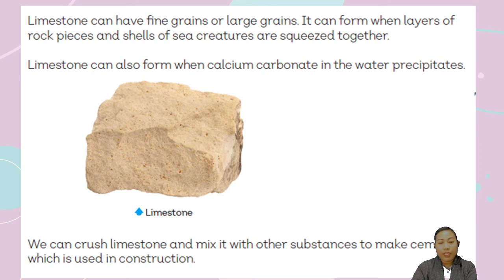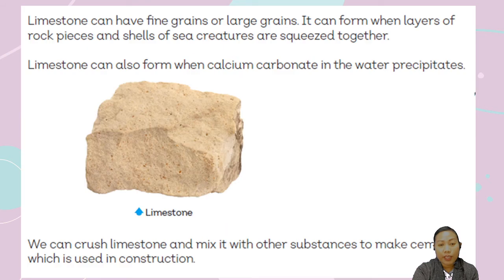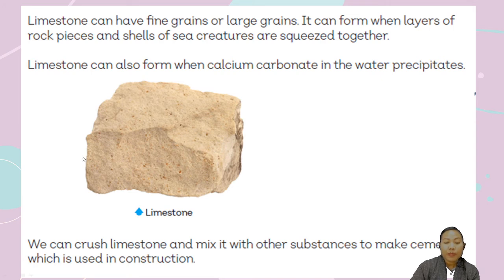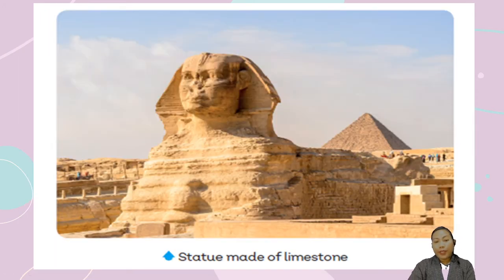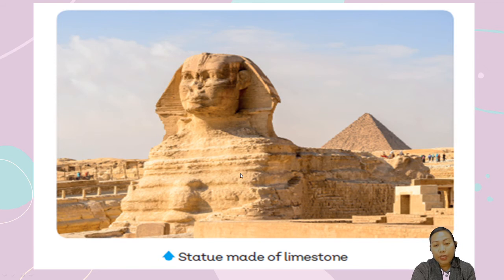Limestone can also form when calcium carbonate in water precipitates. We can crush limestone and mix it with other substances to make cement, just like shale. And here is a statue made of limestone — the Sphinx and the pyramid. The Sphinx is made of limestone, which is a kind of sedimentary rock with visible layers.